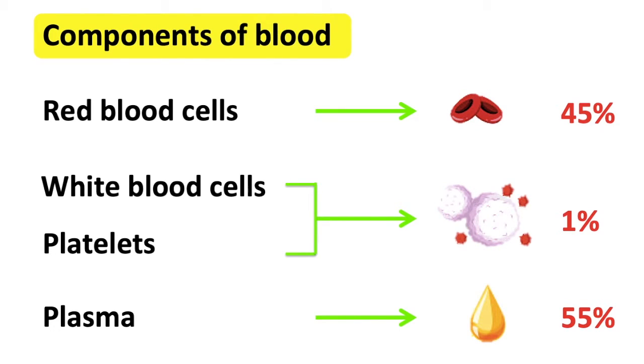Platelets are also known as thrombocytes. These are fragments that help to stop bleeding and help to heal wounds by forming blood clots.